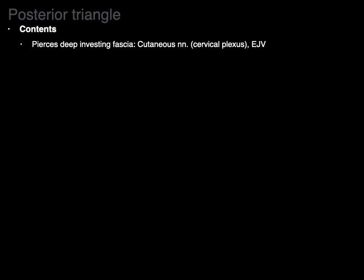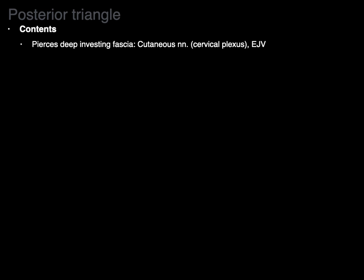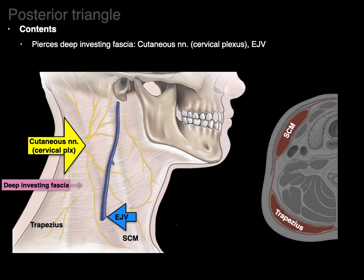The contents of the posterior triangle are as follows. What pierces the deep investing fascia are the cutaneous nerves from the cervical plexus and our external jugular vein. Right in the posterior midline, posterior part of the sternocleidomastoid, we have these cutaneous branches of the cervical plexus that branch out — that's called Erb's point of the neck. We also have the external jugular vein piercing in that area, along with superficial cervical nodes. Watch as those nerves come out between our scalenes and pierce the deep investing fascia and go out into the skin.